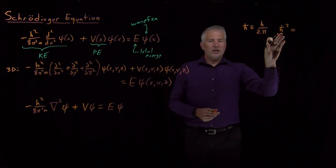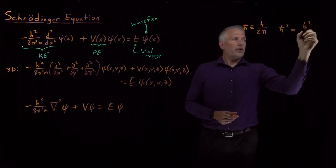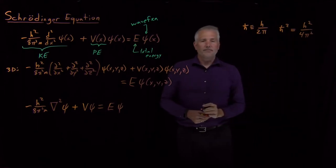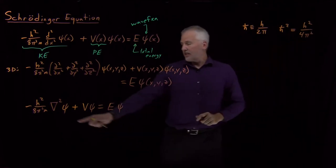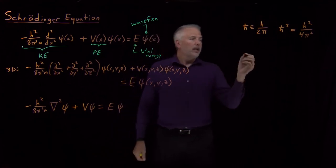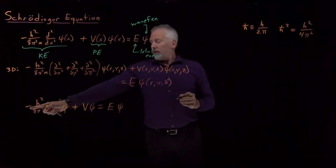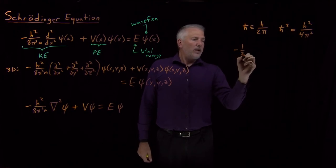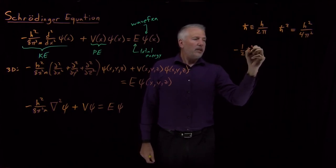That new constant, ℏ², is going to be the square of h/2π, or h²/4π². That looks almost like this h²/8π², and I can say that -h²/8π² is -½ℏ².